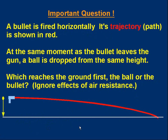Here's an important question. A bullet is fired horizontally — its trajectory, which means its path, is shown in red. At the same moment as the bullet leaves the gun, a ball is dropped from the same height. The yellow ball is dropped at the moment the bullet leaves the gun. Which reaches the ground first, the ball or the bullet? We ignore the effects of air resistance. Pause the video if you want to think about that.